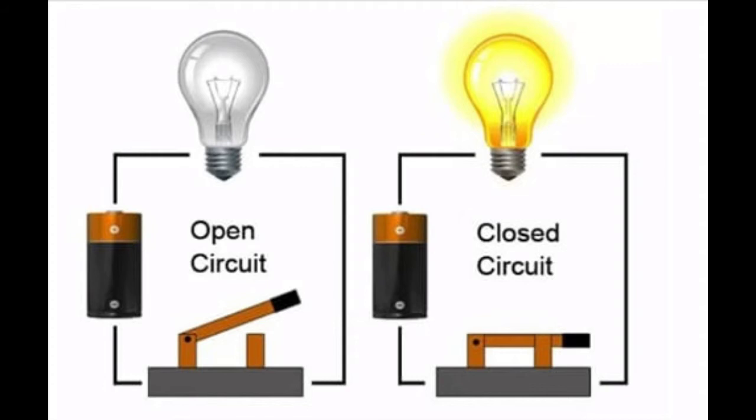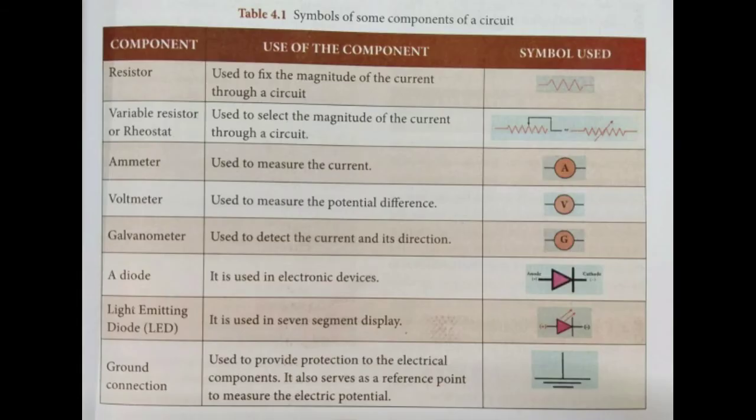The electrons flow from the negative terminal to the positive terminal of the battery. By convention, the direction of current is taken as the direction of flow of positive charge, or opposite to the direction of flow of electrons. Thus, electric current passes in the circuit from the positive terminal to the negative terminal.